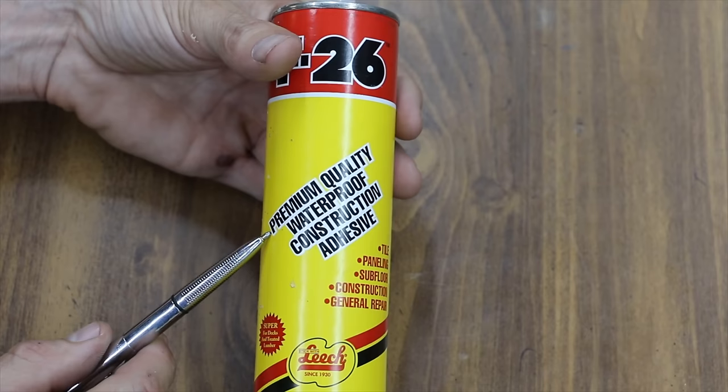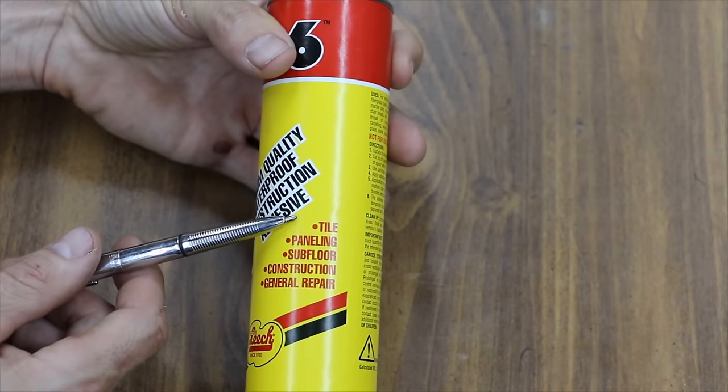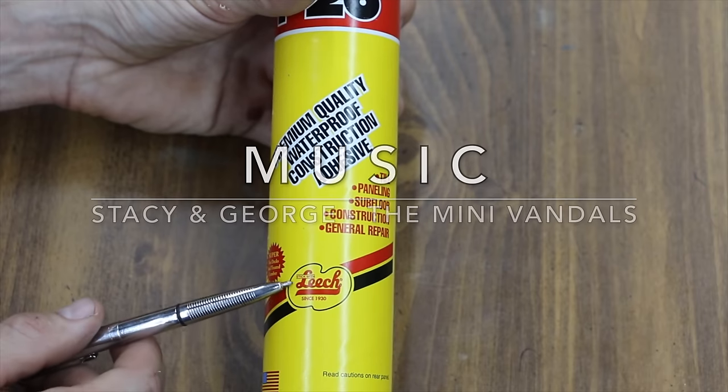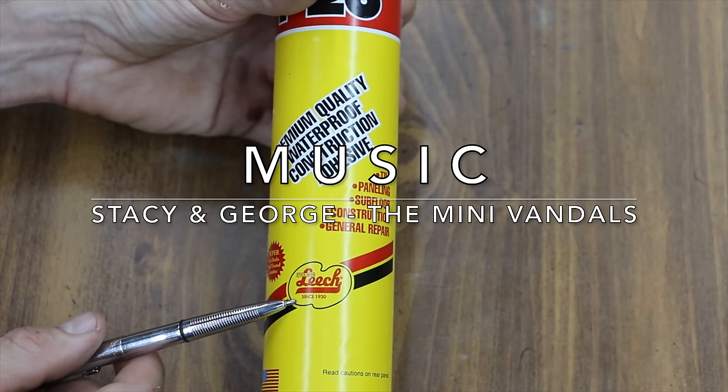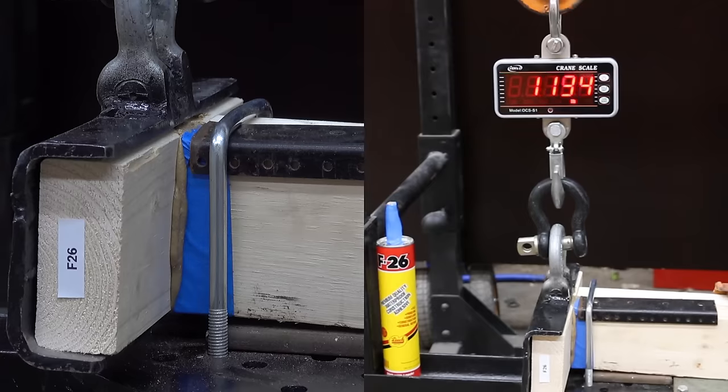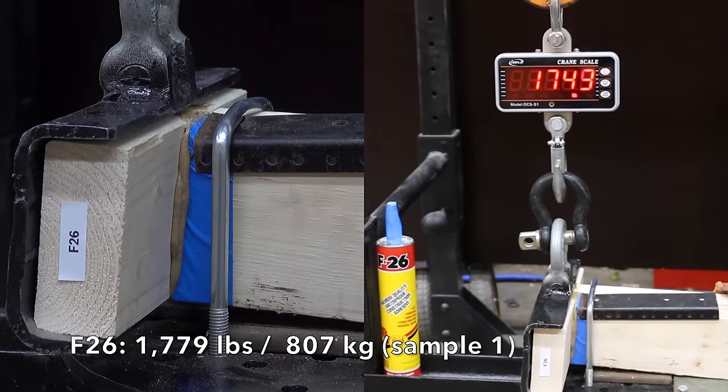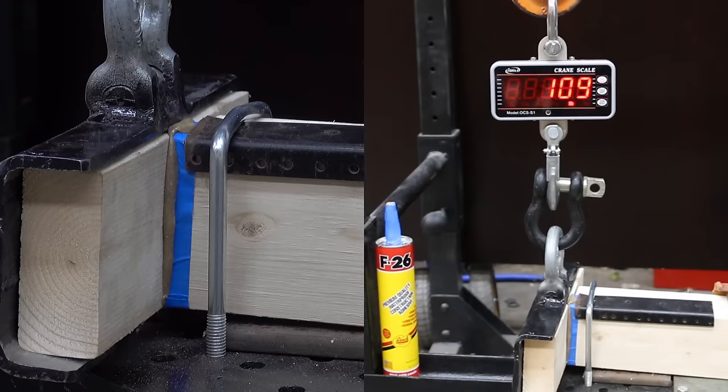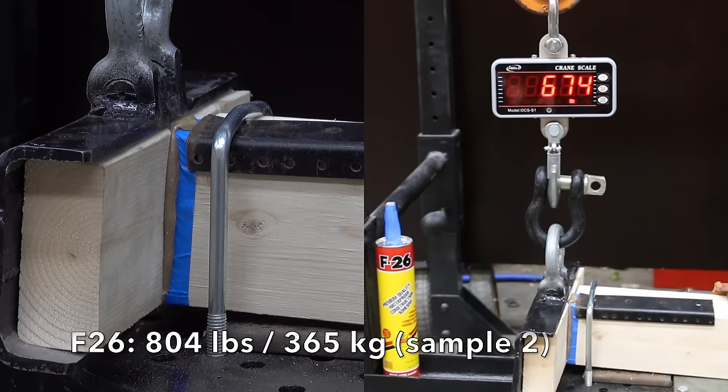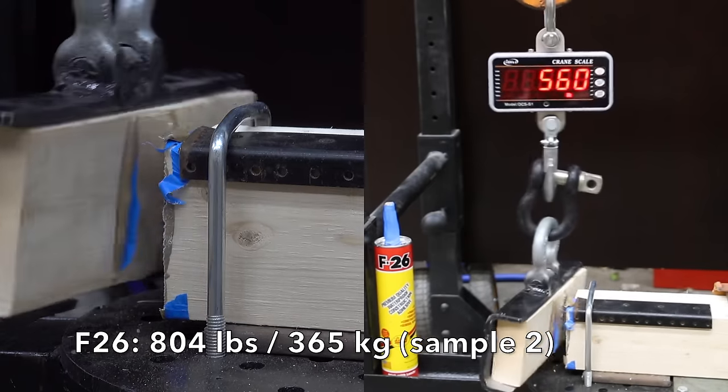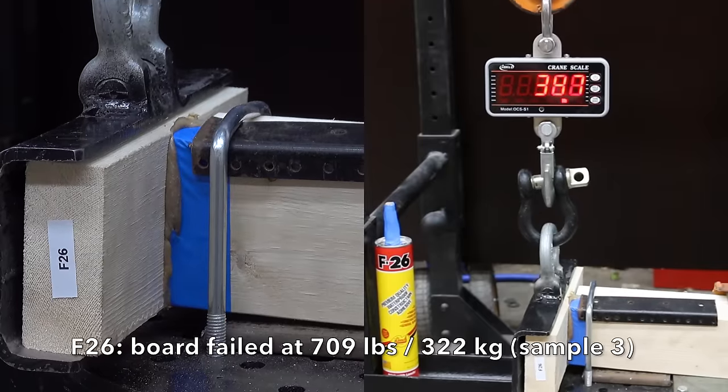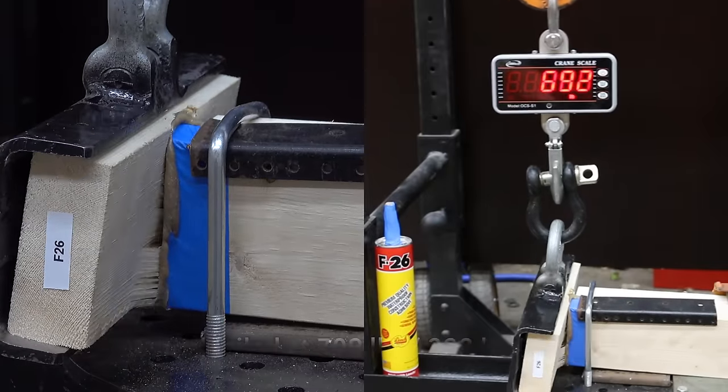F-26 is a premium quality waterproof construction adhesive. It's designed for tile, paneling, subfloor construction, and general repair. It's made by Leach, and they've been in business since 1930. F-26 put up a big number of 1,779 pounds on the first sample. The next sample dropped to 804, which is still pretty impressive. The third was down to 709.